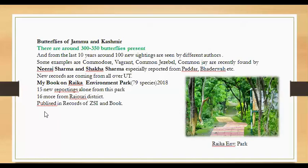Through published literature, Jammu and Kashmir (apart from Ladakh) has 300 to 350 butterfly species. Around 100 new sightings have been recorded in the last 10 years by different authors including myself. Examples include the Commodore, Vagrant, and Common Jezebel, recently found from 2015 to 2017 by Neera Sharma and Shaka Sharma, especially from the Paddar valley and Bhadarwah area. I have also compiled a booklet on Raika Environment Park listing around 79 species, with 15 new records from that park alone.